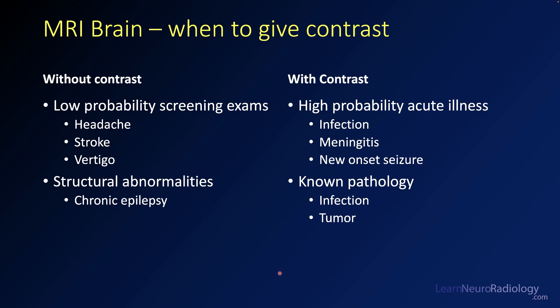When should you give contrast, particularly on an MRI of the brain? Most of the time you get a lot of information without contrast. If you're doing a screening exam — relatively low probability of something severely abnormal, such as headache, stroke, or vertigo — you often don't need to give contrast. If you're looking for structural abnormalities like cortical malformations or schizencephaly, you'll see those very well without contrast.